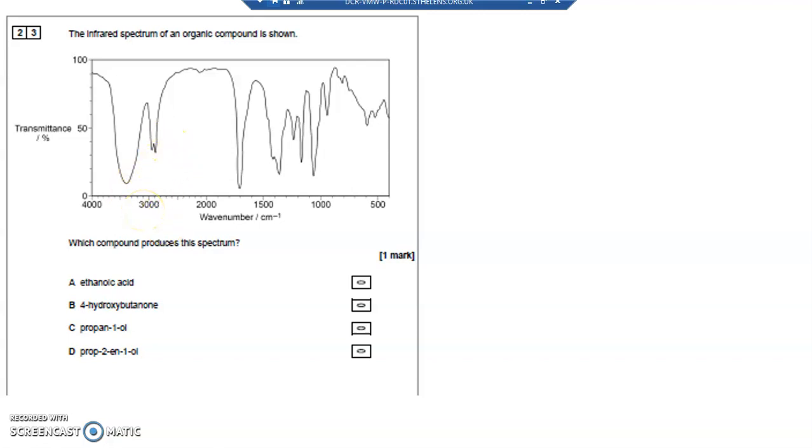Question 23. I've got an infrared spectrum of an organic compound. If you shine infrared light through a sample of an organic compound, then the bonds in there stretch and bend and absorb some of that infrared light.